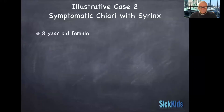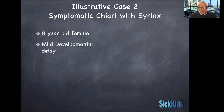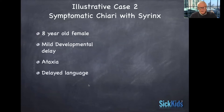Next case: a symptomatic Chiari with a syrinx. An eight-year-old female presenting with some mild developmental delay, ataxia, delayed language, and mild scoliosis.